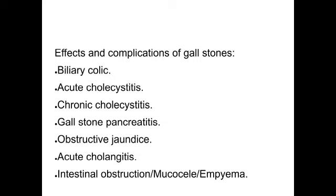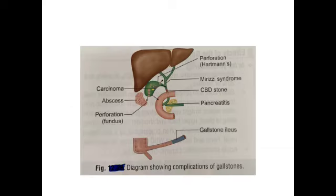Complications of gallstones are: biliary colic, acute cholecystitis, chronic cholecystitis, gallstone pancreatitis, obstructive jaundice, acute cholangitis, intestinal obstruction, mucocele, and empyema. The schematic representation shows complications including carcinoma, pericholecystic abscess, perforation and peritonitis, perforation at Hartmann's pouch, Mirizzi syndrome, CBD stones, pancreatitis, and gallstone ileus.